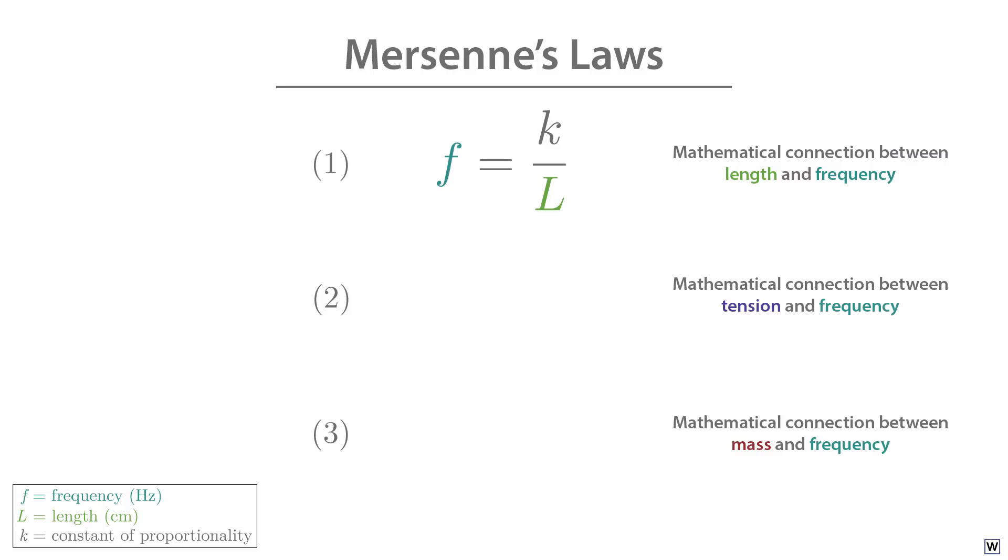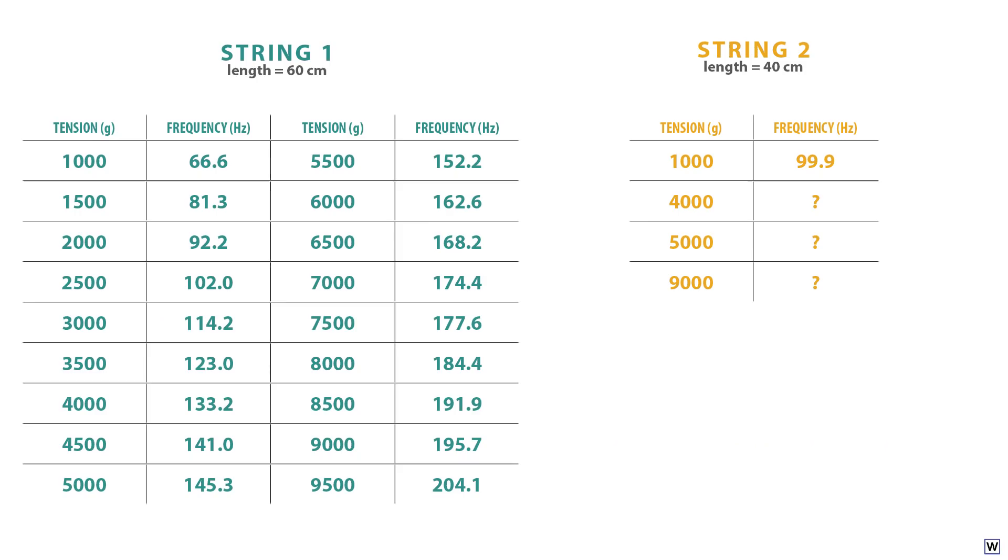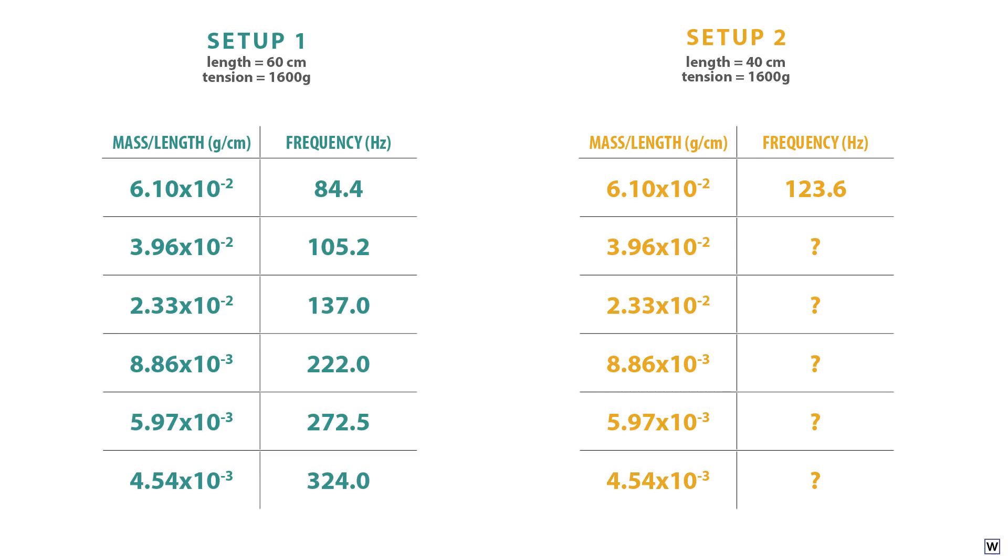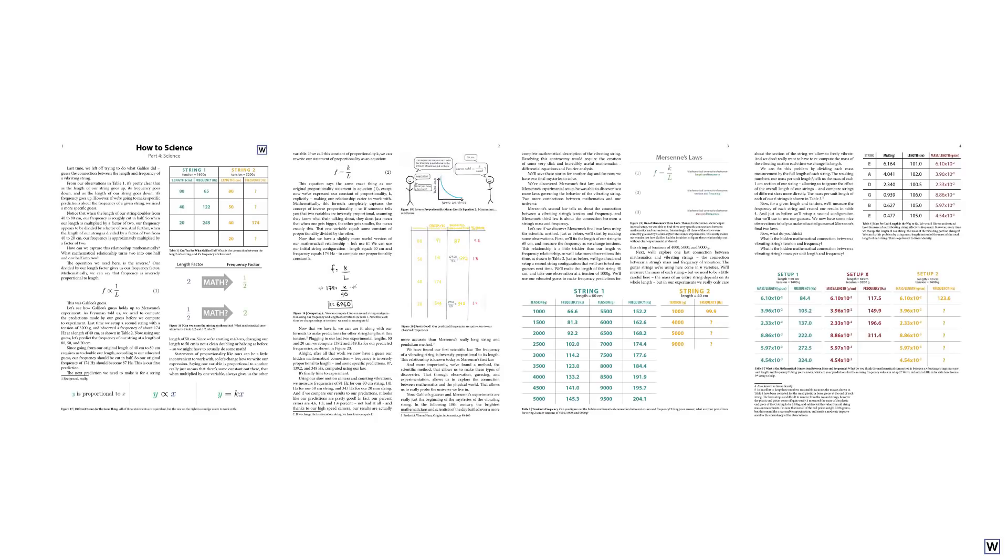We now have some nice observations to help us make educated guesses at Mersenne's final two laws. Now, what do you think? What is the hidden mathematical connection between a vibrating string's tension and frequency? What is the hidden mathematical connection between a vibrating string's mass per unit length and frequency? For a closer look at our data, and some additional observations, check out the PDF linked below. Good luck, and thanks for watching.